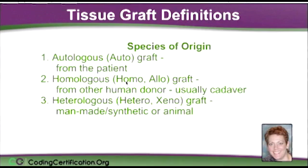Usually a cadaver, because most people that are alive don't go around donating their skin. And then the third type is the hetero or xenograft. That could be a man-made or synthetic type of graft, and those are becoming more and more popular — you'll see the code selection growing because of all the different types. And then there's the animal grafts. The codes in the CPT book are going to have those terms, so it's important to understand that.